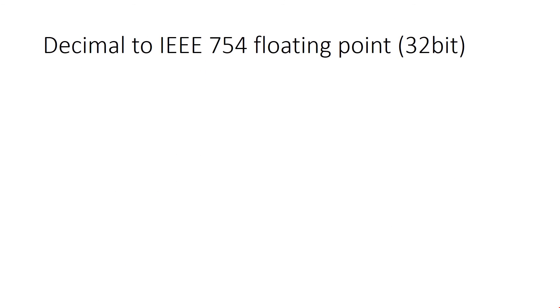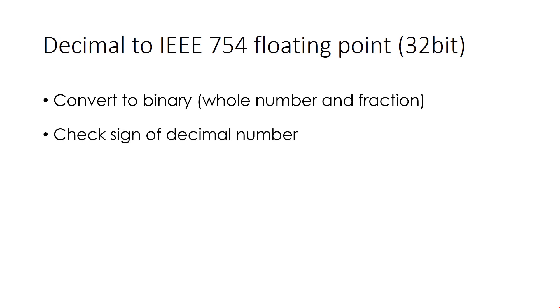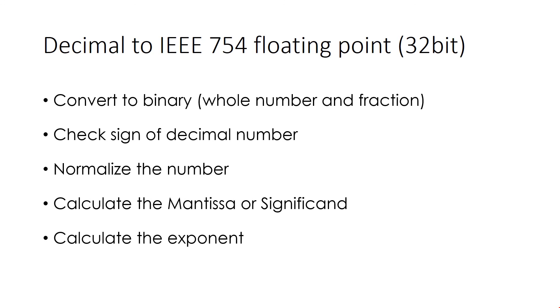Let's see the process of conversion. First convert the decimal number into binary as a whole number and fraction. Then check the sign of the decimal number. Then normalize the converted binary number. Calculate the mantissa or significand. Calculate the exponent and finally write sign, exponent and mantissa collectively.